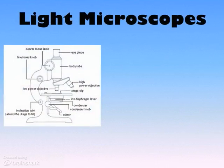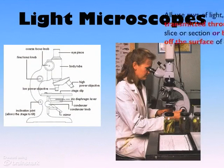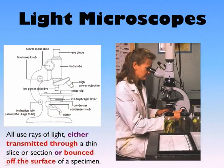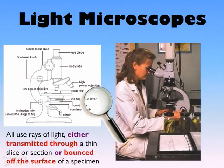One category of microscope that we'll be looking at are the light microscopes. All of the light microscopes work on the same type of premise by using rays of light, either shining through a really thin specimen or bouncing off the surface of a specimen. Even the lowly magnifying glass counts as a light microscope.